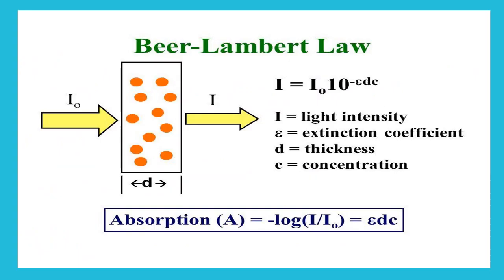Spectrophotometry is a chemistry principle involving the quantitative measurement of the reflection or transmission properties of a material as a function of wavelength — essentially measuring the wavelength of light. This is illustrated pictorially: on the left we have light intensity I₀, then a medium containing blood cells shown in an orangish-red color, and on the other side the transmitted light, having crossed a distance D through that medium. This is the pictorial presentation of Beer-Lambert law.